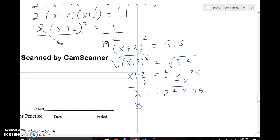So x is negative 2 plus 2.35, or 0.35, which is (0.35, 0) for that x-intercept. Or x is equal to negative 2 minus 2.35, which will be negative 4.35, or (-4.35, 0) for that x-intercept.